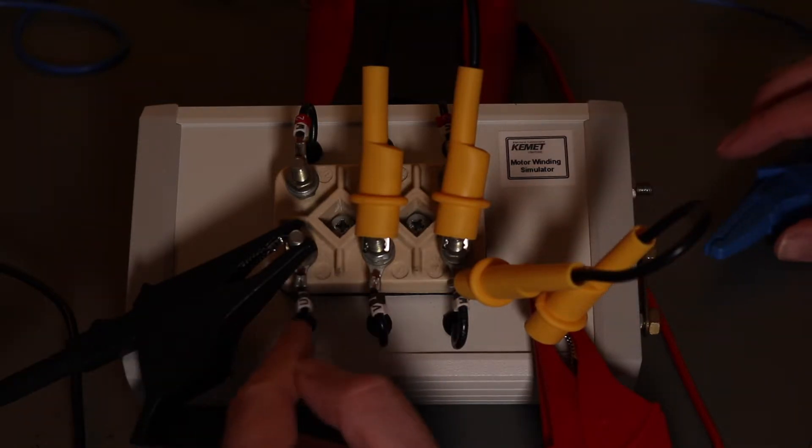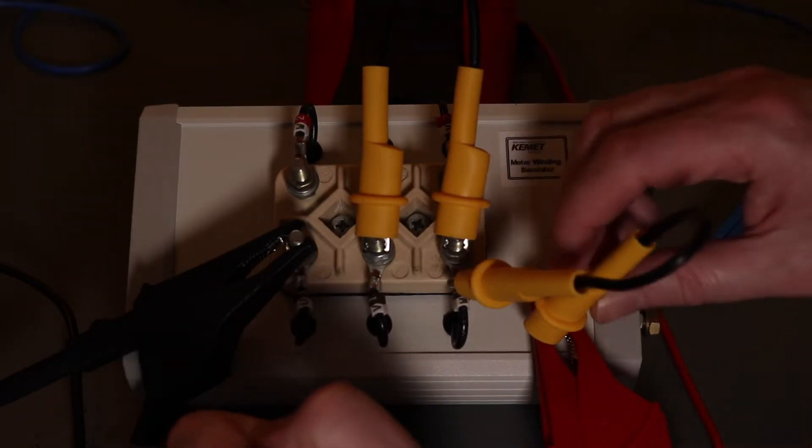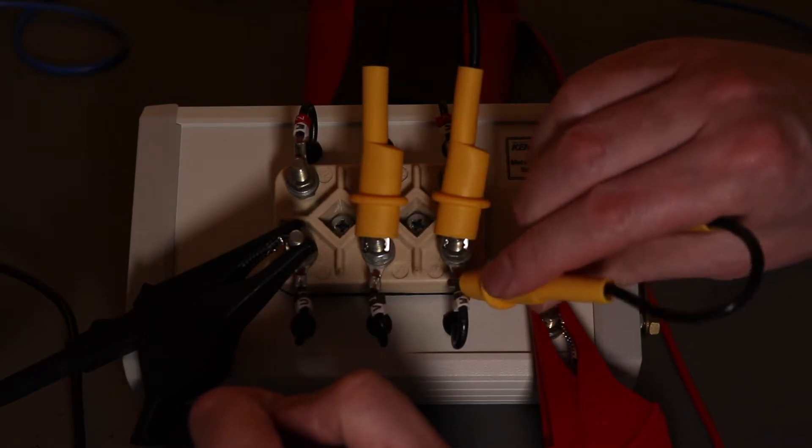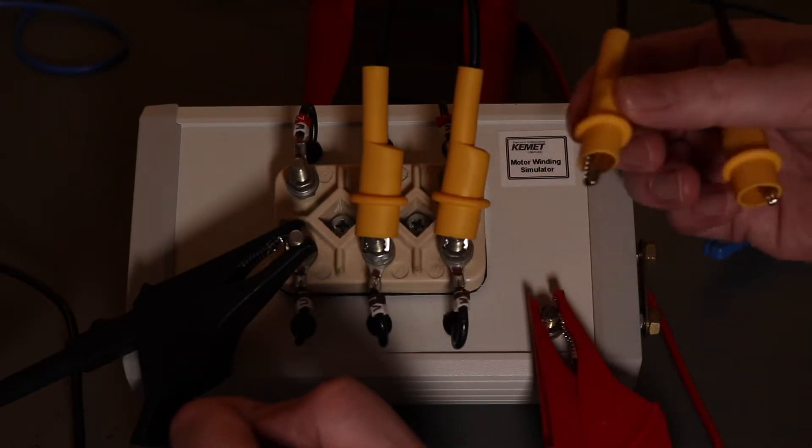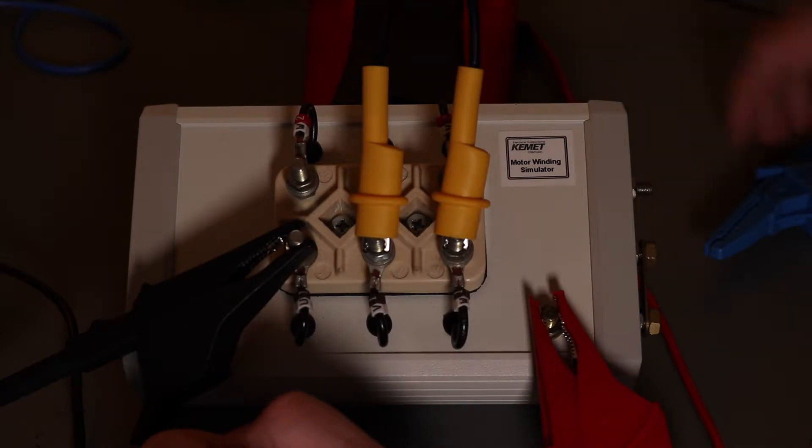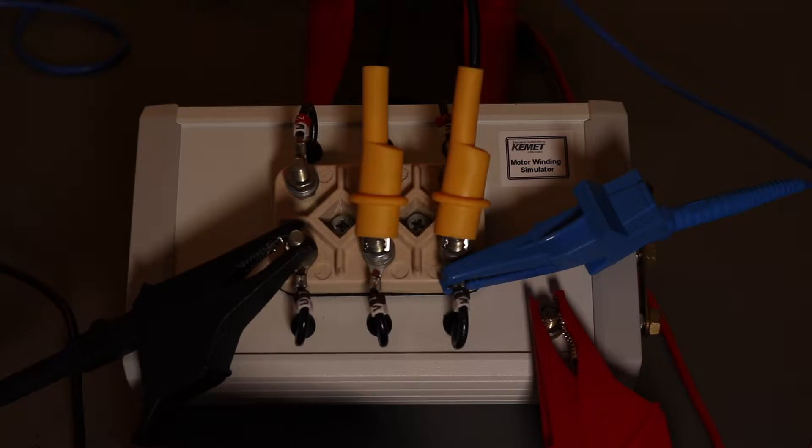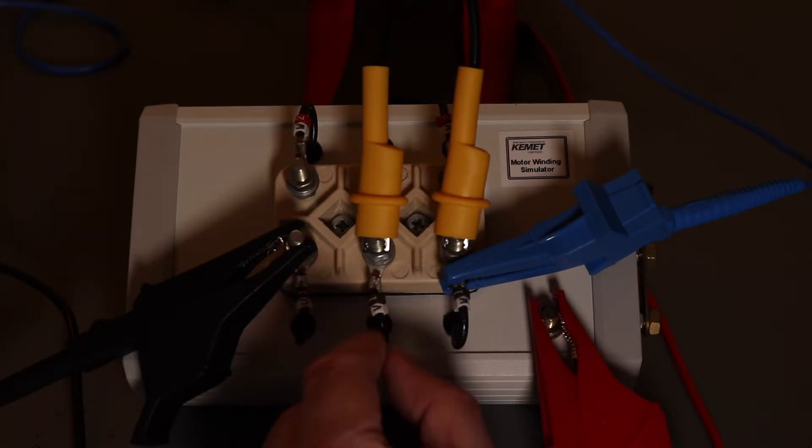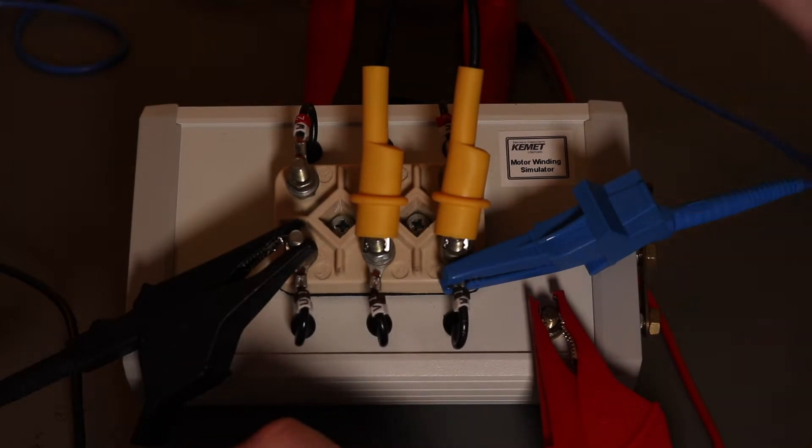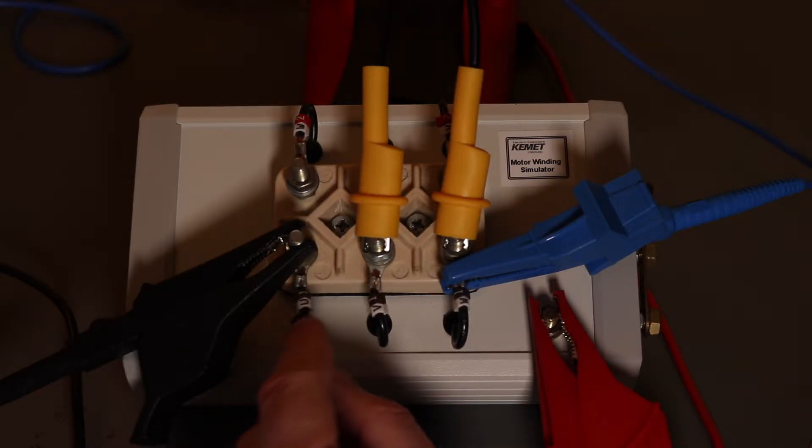To get a true value of this phase just to earth, I can remove the link that takes the two untested phases to earth and I can instead clip the guard terminal on there. Now any leakage from this phase into these two phases goes into the guard terminal and is subtracted from the insulation reading. So that would be a higher reading of just the insulation resistance, the true value of this phase to earth.